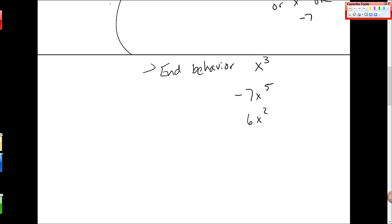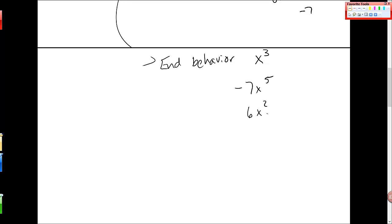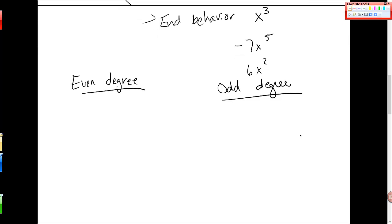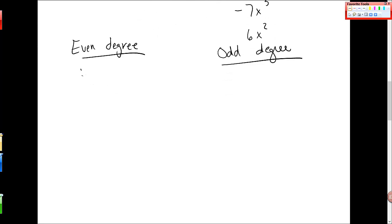So for monomials, they fall into two very neat categories. And the two categories are even degree, and then the other category, once you say that one is even, the other one is odd degree. So we want to just think, I want you to think about what x squared looks like. So x squared looks just like this. This is what x squared looks like.